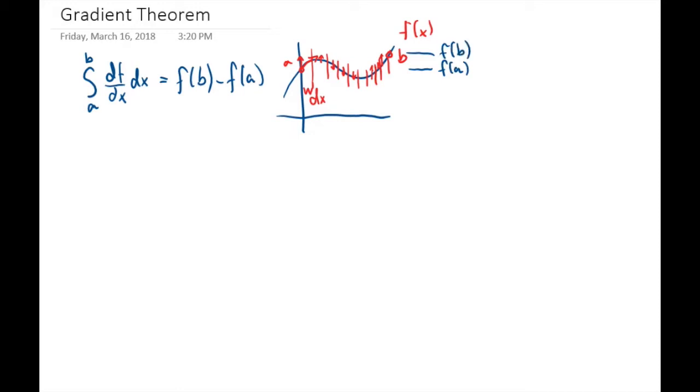So the fundamental theorem for gradients is exactly the same. The integral along a path from point a to b of the gradient of t, and that's the dot product with dl, an infinitesimal piece of path, will equal t of b minus t of a.